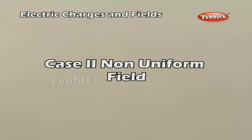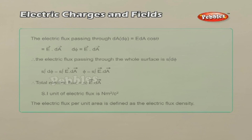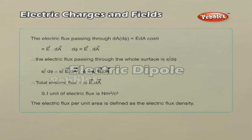For a non-uniform field, the surface is divided into a large number of small area elements delta A such that the electric field remains approximately constant over each small area. The total electric flux is then obtained by summing the contributions from all area elements.